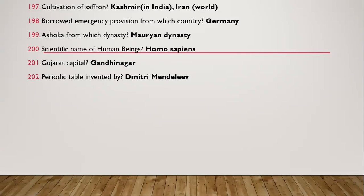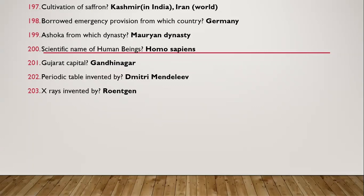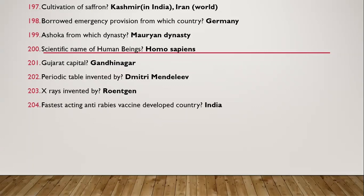Question 195: Periodic table was invented by Dmitri Mendeleev. Question 196: X-ray was invented by Roentgen. Question 197: Fastest-acting anti-rabies vaccine was developed in India.